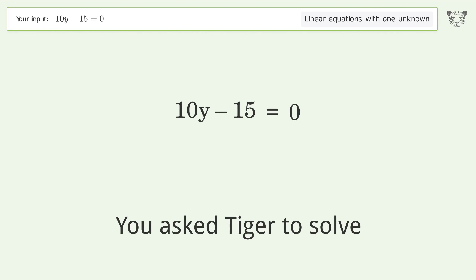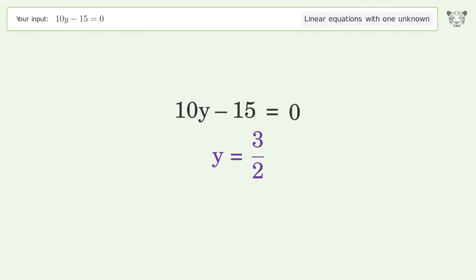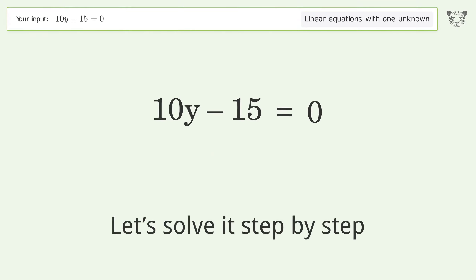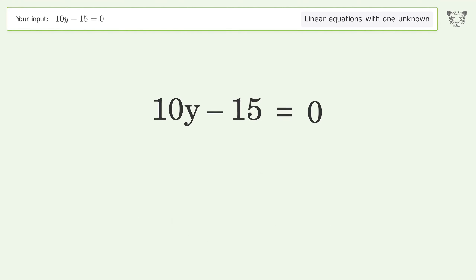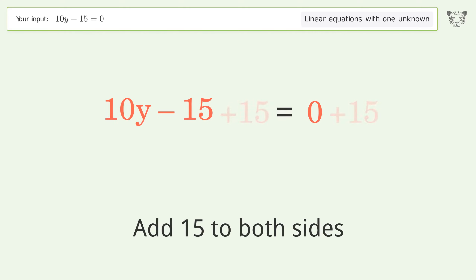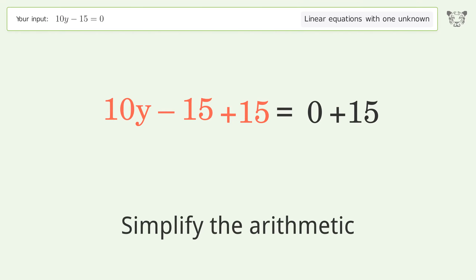Tiger was asked to solve a problem dealing with linear equations with one unknown. The final result is y equals 3 over 2. Let's solve it step by step. Group all constants on the right side of the equation — add 15 to both sides and simplify the arithmetic.